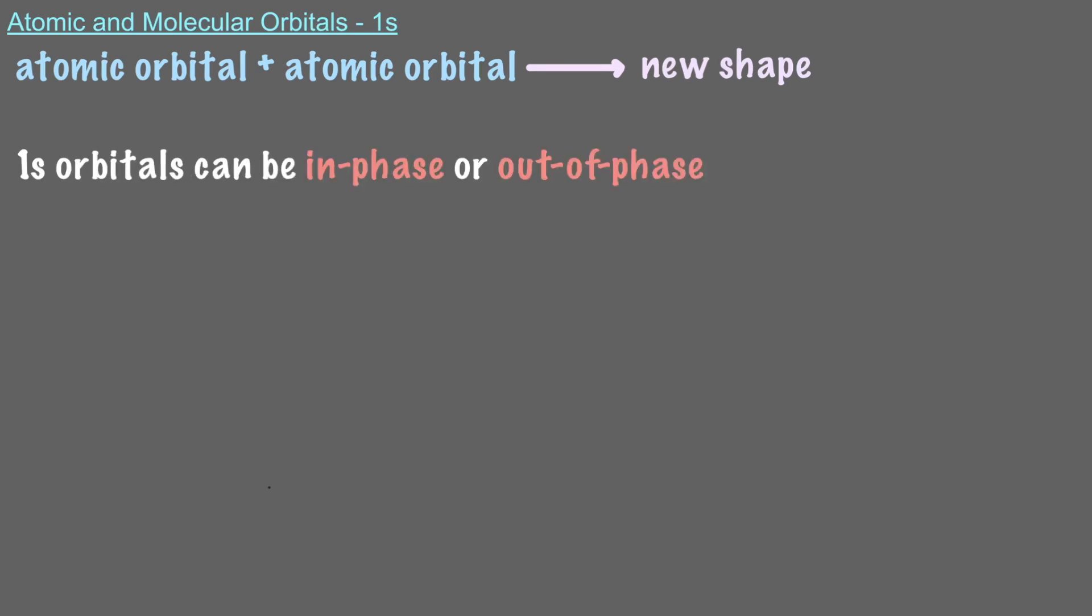When two atomic orbitals combine, they produce new shapes. 1s orbitals can be in-phase or out-of-phase. Let's take a closer look at the in-phase atomic orbitals.